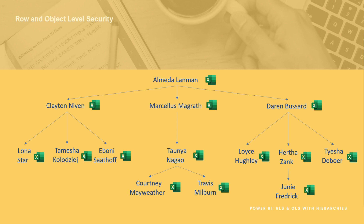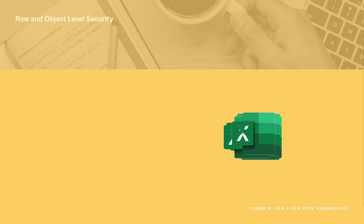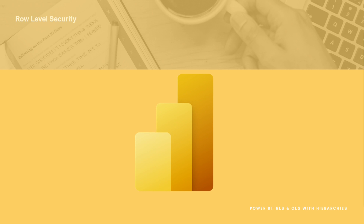A better approach is to combine these into a single Excel file. This single Excel file, instead of holding the data itself, has Almeda getting the data from Power BI which has security enabled to ensure each individual can only see their own numbers. Better still, you can remove the Excel entirely and have only a Power BI report. Let's look at how we can do row level security with a quick overview of the organization and how the security will work when we build it out in Power BI.